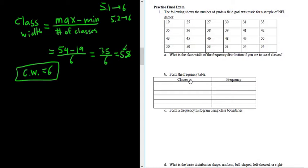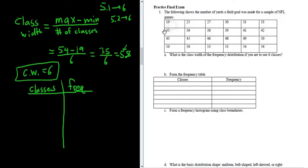Now that we have the class width, it says form a frequency table. So we have classes and frequencies. The first step in constructing a frequency table from scratch is to write down the smallest number. So in this case, the smallest number is 19, so we write down 19.